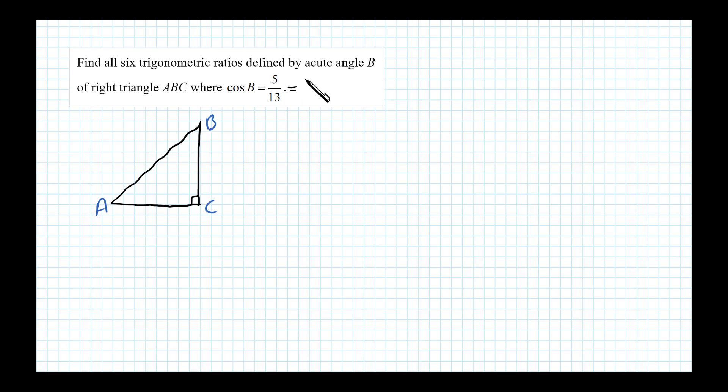Remember, cosine is defined as the side adjacent over the hypotenuse. So 5 represents the length of the adjacent side. Here's angle B, and we'll label this as 5 units - this is the side adjacent to that angle. The hypotenuse is given to be 13, so cosine of B equals 5/13 corresponds to this illustration.